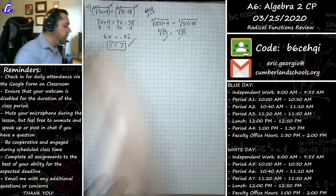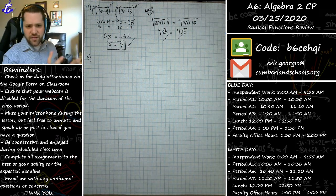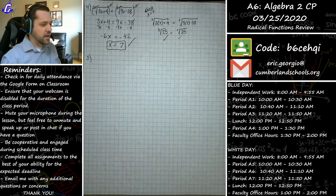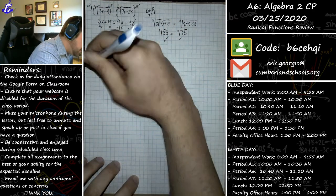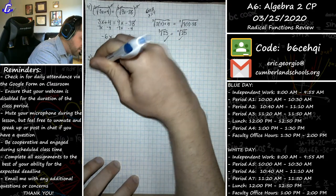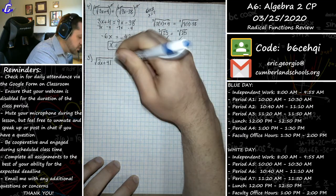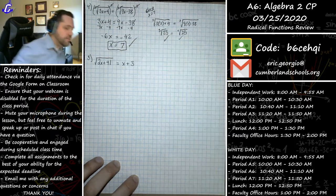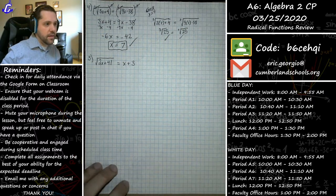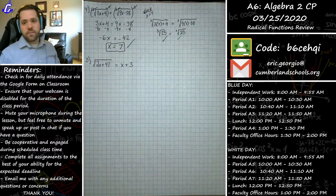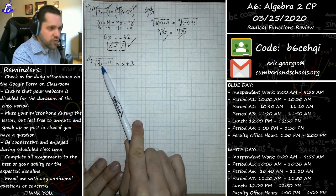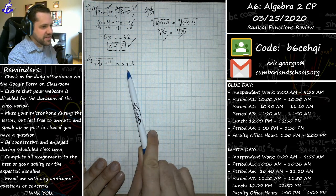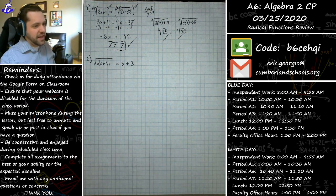Moving on to problem five — what I'd consider an intermediate level problem. Problem five states: the square root of (2x + 41) should equal x + 3. What makes this harder is that we have an x under the radical and an x outside the radical. I need to get rid of the radical to reach x, but I may also have to do some distribution.